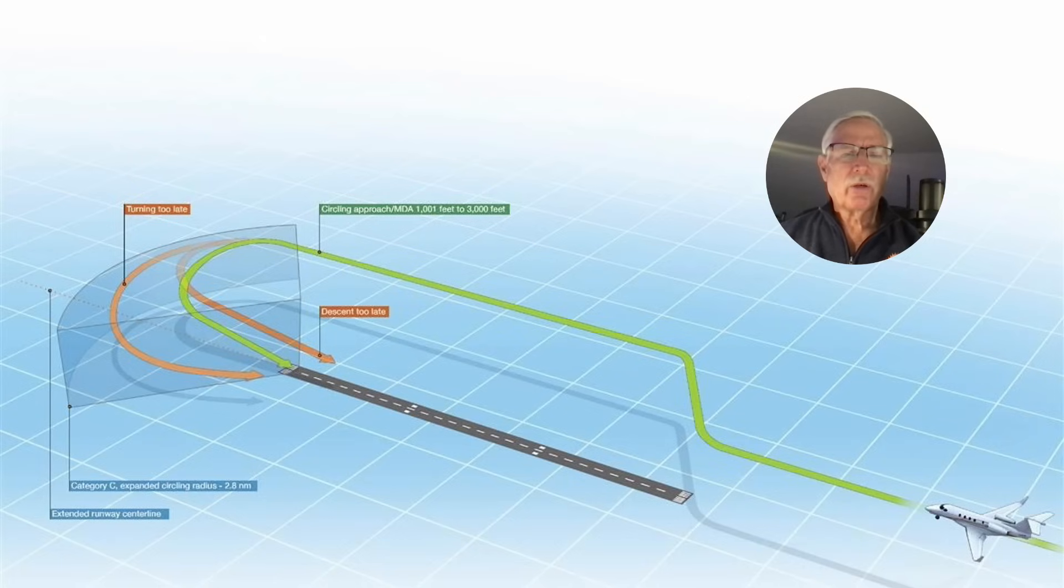So here we're coming in and we're going to do kind of the extreme example of a circling approach. You're coming into one runway and you're going to circle to the opposite runway. And as you can see from the diagram you've got various dangers of overshooting if you don't plan it just right. Now why does this occur?